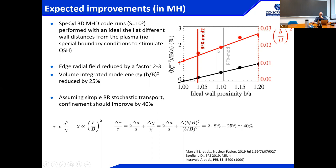Going from RFX-mod to RFX-mod 2 in the visco-resistive code, both the edge radial field — the black line — clearly decreases, and when the wall touches the plasma it goes to zero. The average energy of the modes decreases by about 25 percent. Assuming simple stochastic transport scaling — which we know is not entirely correct — and noting this is for the multiple helicity regime, this would correspond to a 40 percent increase in confinement. We should see something different in RFX-mod 2.